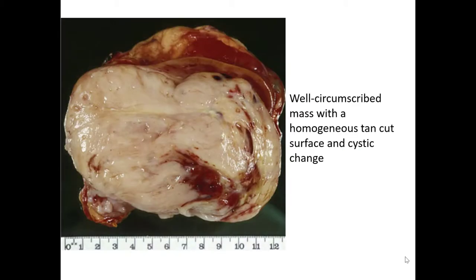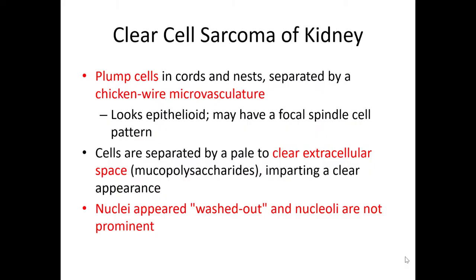They tend to be well circumscribed with a tan white cut surface; you may see hemorrhage and cystic change. Histologically, clear cell sarcomas of the kidney are made up of plump cells that grow in cords and nests, separated by a delicate chicken wire-like microvasculature. The cells can have an epithelioid look — more cohesive, with more abundant cytoplasm — but they can also have spindle cell features. These cells are separated by an extracellular mucopolysaccharide matrix substance that gives the clear cell appearance from lower magnification, though it is not truly cytoplasmic clear cell change.